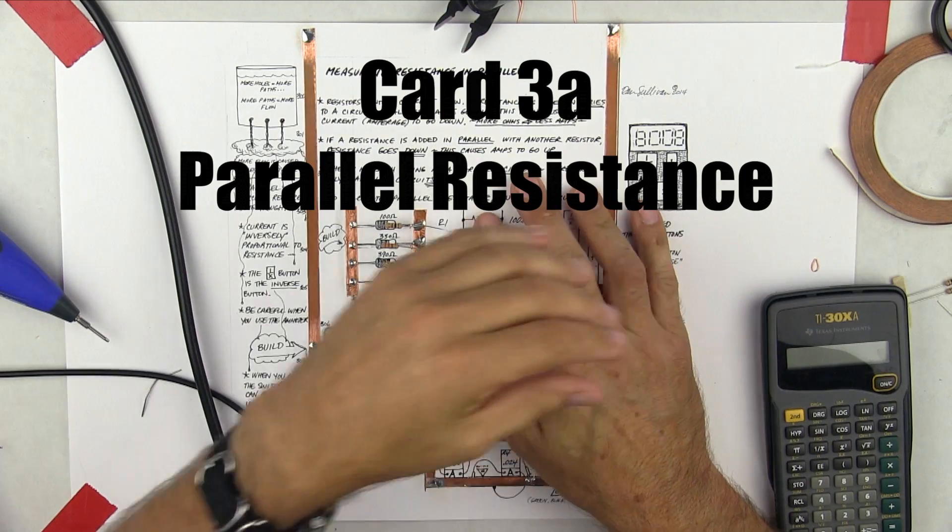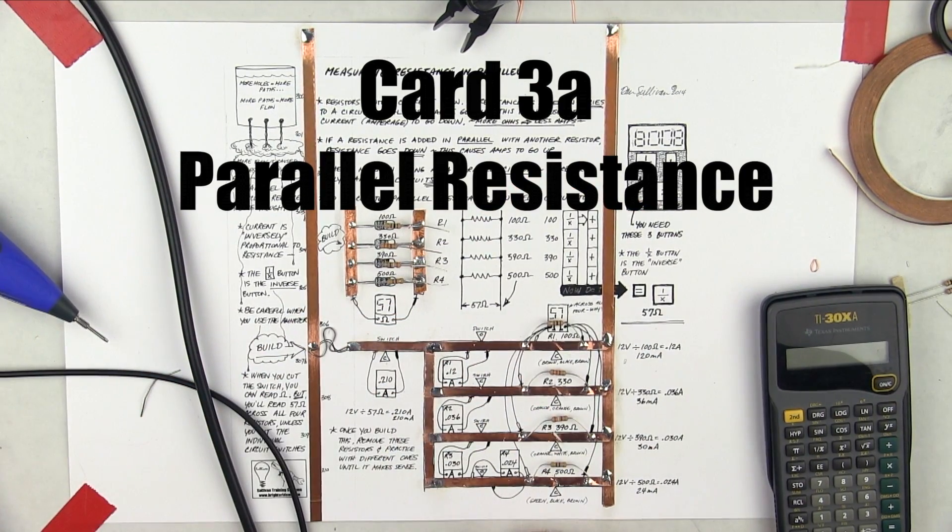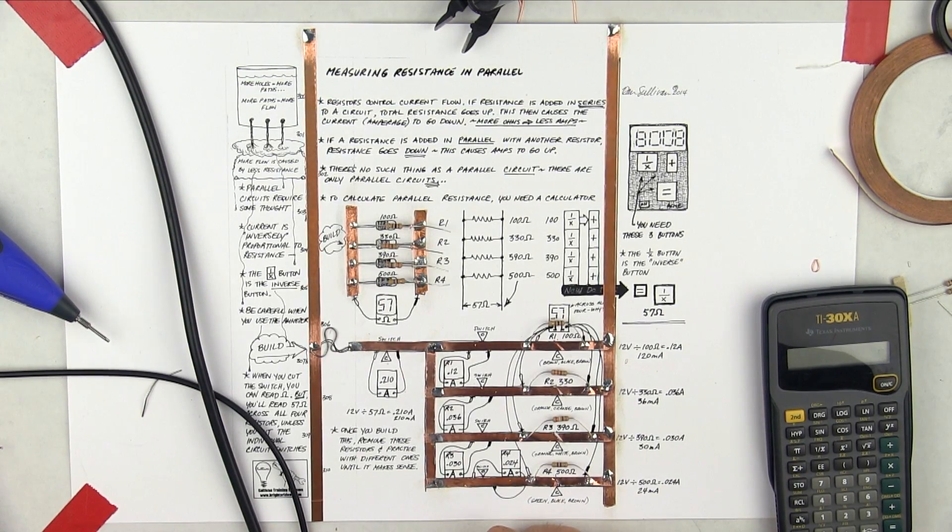Okay guys, this is Dan Sullivan, and this is card number three. Line numbers 300 to 310, measuring resistance in parallel.